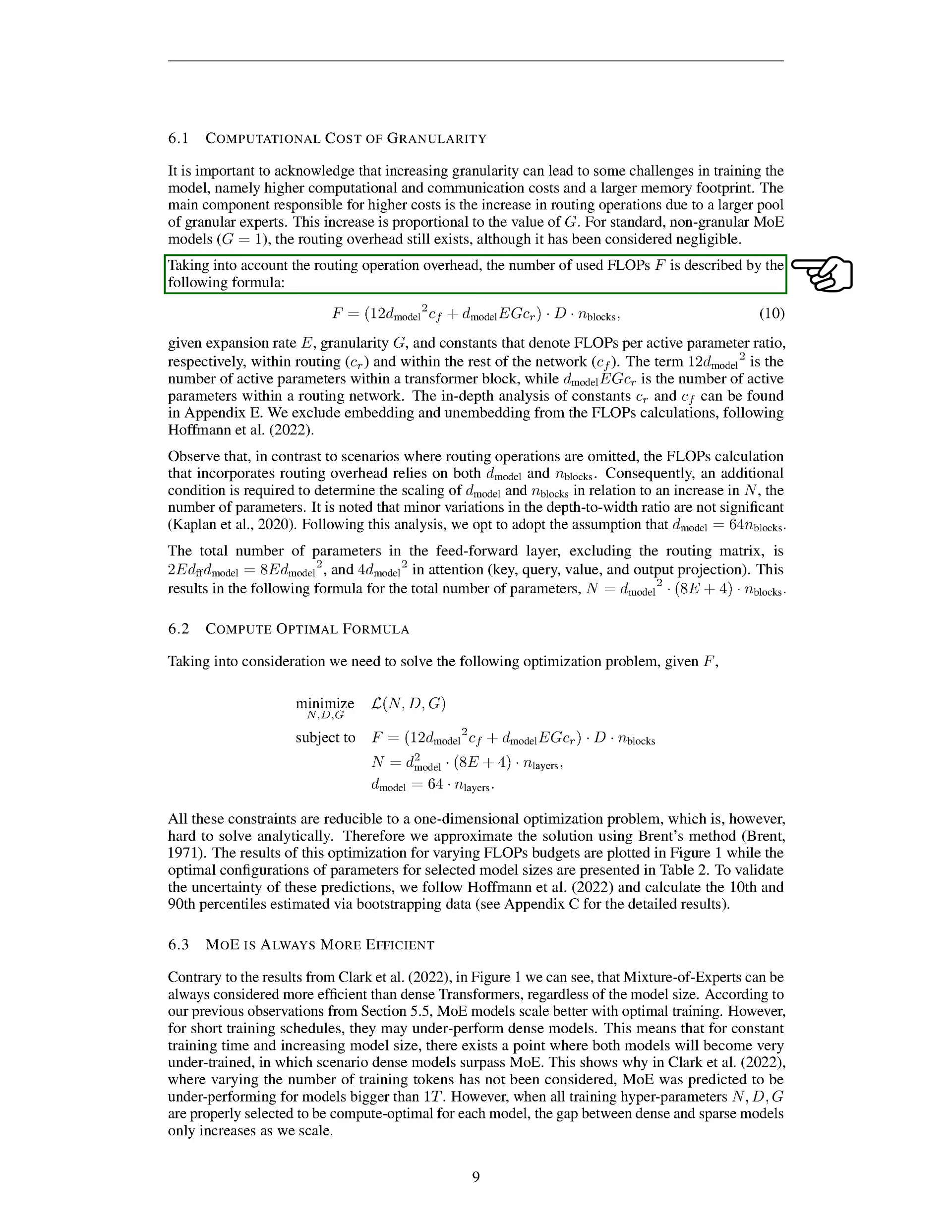Moving on to finding the optimal formula for computational allocation, we face a complex optimization problem. Since solving this analytically is challenging, we use Brent's method for approximation. We then present the results of this optimization for different flops budgets and show the optimal configurations for selected model sizes. To ensure the reliability of these predictions, we estimate the uncertainty through bootstrapping, with detailed results available in the appendix. Contrary to some previous findings, our results demonstrate that mixture of experts (MoE) models are always more efficient than dense transformers, regardless of the model size. MoE models scale better with optimal training, although they might not perform as well as dense models under short training schedules. This indicates that there's a point at which both models become under-trained as model size increases, but with proper selection of training hyperparameters, MoE models increasingly outperform dense models.